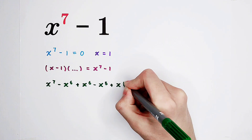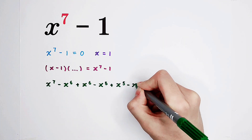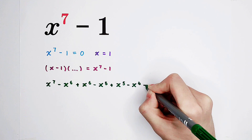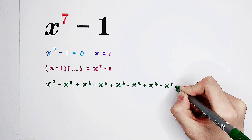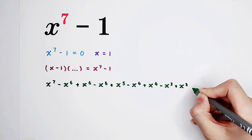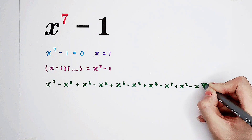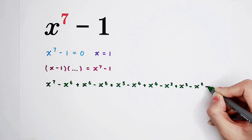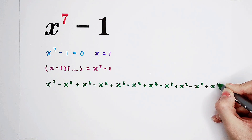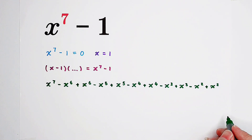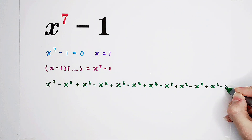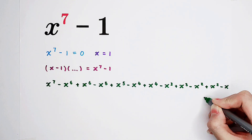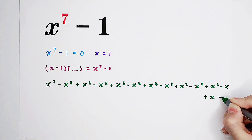Then plus x to the power of 5. Subtract x to the power of 4, then add it back. Subtract x to the power of 3, then add x cubed back. Minus x squared, then plus x squared. Oh my god, there isn't any place anymore! Minus x, plus x, minus 1.